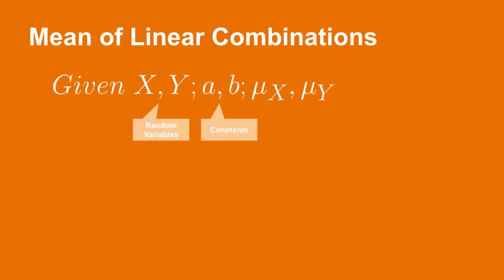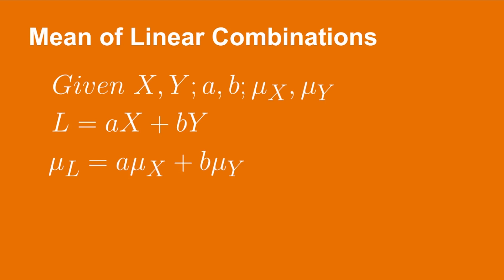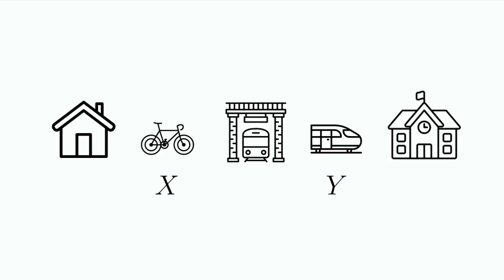Luckily there are clear relationships between these terms. Given two random variables X and Y and constants a and b, with the means for those respective random variables as μX and μY, we can define a linear combination L as aX plus bY. To determine the mean value of the random variable L, denoted as μL, we simply take the linear combination of the means of X and Y, which we write as a times μX plus b times μY.